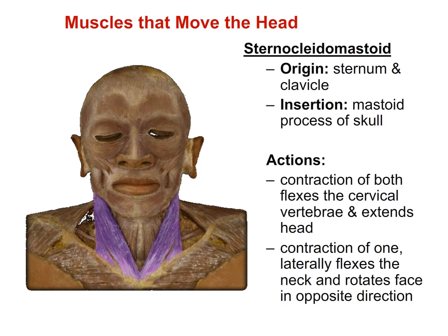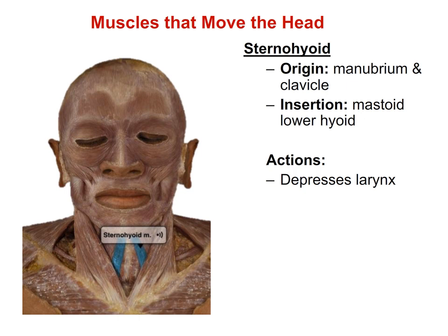Another muscle on the anterior part of the neck is the sternohyoid. The origin and insertion are in the name: the origin is the manubrium of the sternum and also the clavicle, and the insertion is the lower part of the hyoid bone. The sternohyoid helps to depress the larynx during swallowing and speaking.